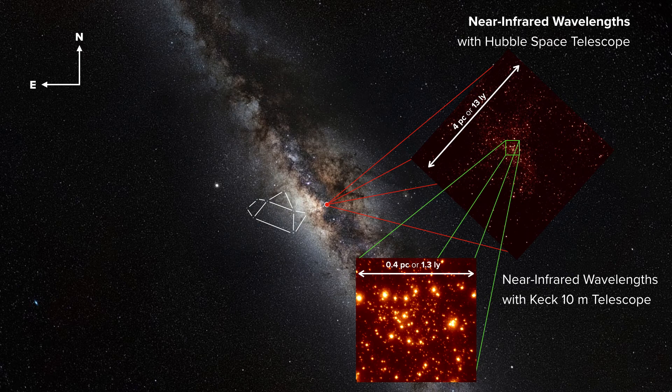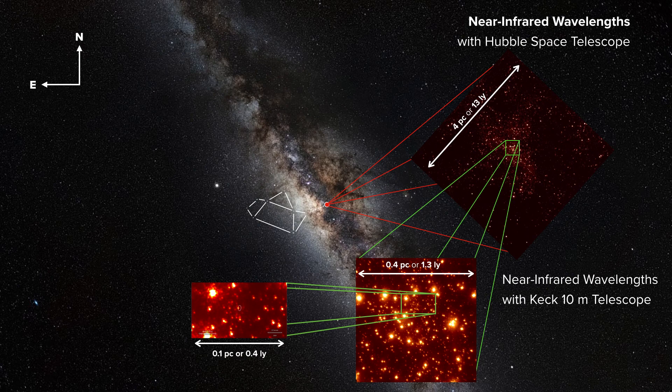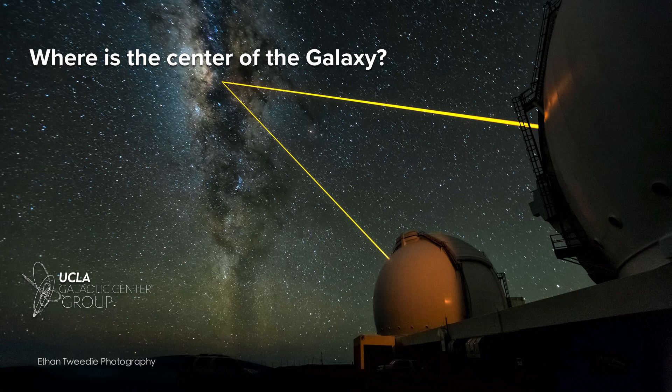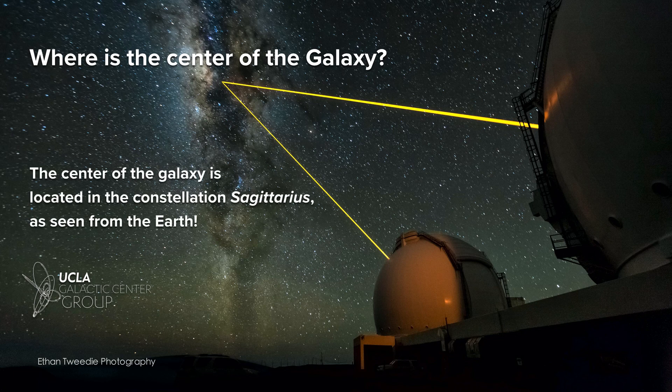This picture shows the central 1.3 light years of our galaxy, taken with the Keck 10-meter telescope in Hawaii. With this data, we can zoom in down to really close to the center, where we can see the stars orbiting the supermassive black hole at the center of our galaxy. To summarize: where is the center of the galaxy in the night sky? It's located in the constellation Sagittarius, right next to a group of stars that looks like a big teapot. Thank you very much.